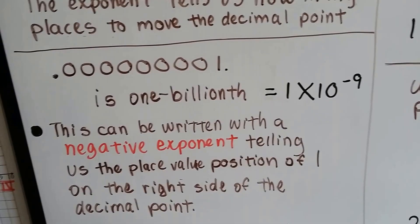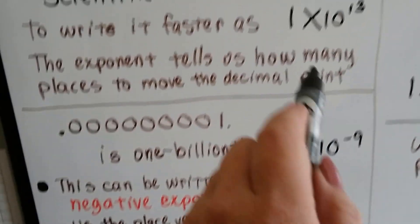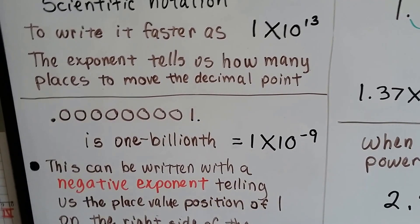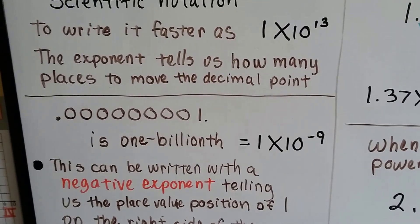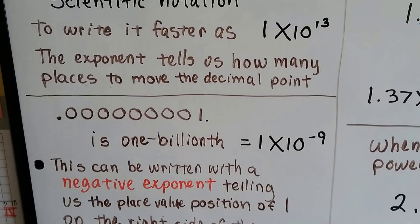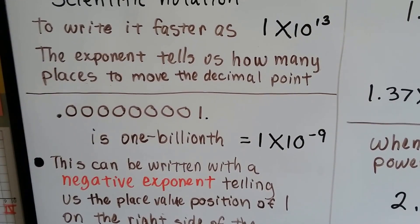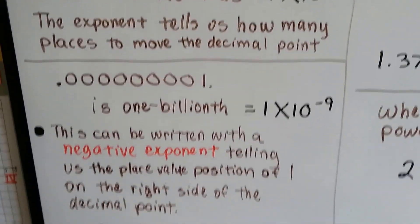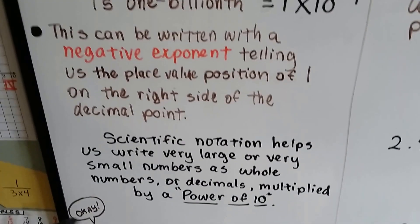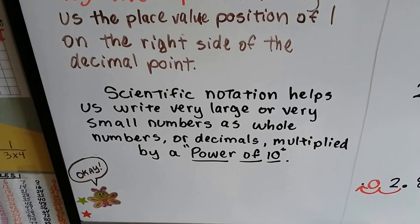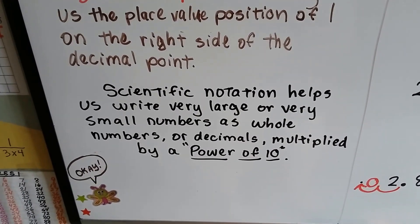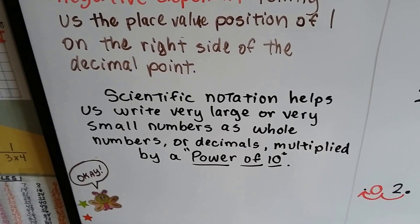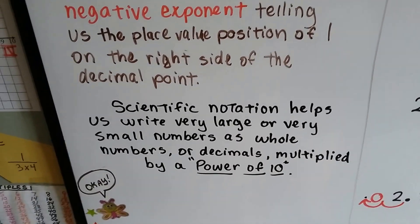Now this is not a variable x. When you see this big huge x, it means multiply — just like in third grade when we used the x for multiply. Scientific notation helps us write very large or very small numbers as whole numbers or decimals multiplied by a power of 10.